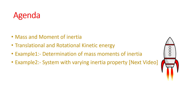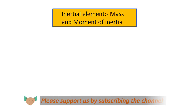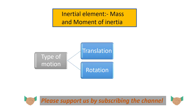The property of an inertial element is that it stores and releases kinetic energy. If we look at the motion of any body, those motions can be broadly classified into two categories: translation and rotation. In the previous video we already discussed the mathematical formulation behind translation and rotation.